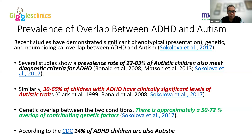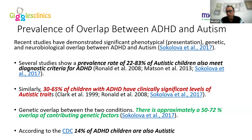Similarly, 30 to 60 percent of children with ADHD show clinically significant levels of autistic traits. There is approximately 50 to 70 percent overlap in contributing genetic factors between the two conditions. CDC reports 14 percent of ADHD children are also autistic. Different studies cite different figures, but the overlap is significant.